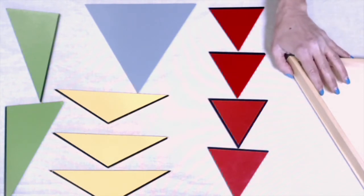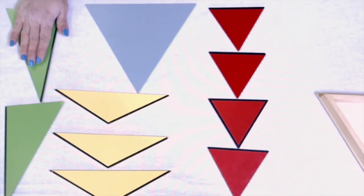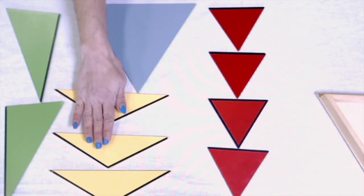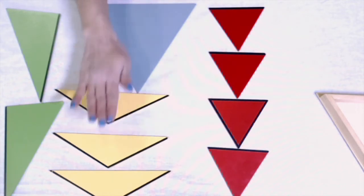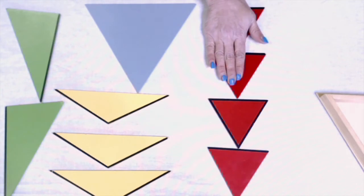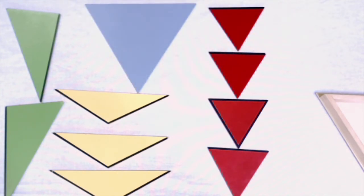I'm going to try and make my Right Angle Triangle, my Isosceles Triangle, and my Equilateral Triangle into one large Equilateral Triangle each.